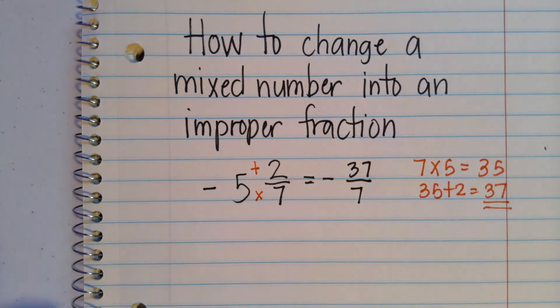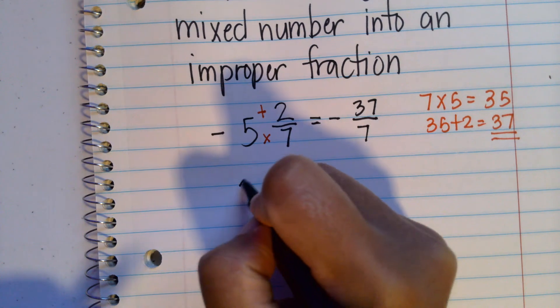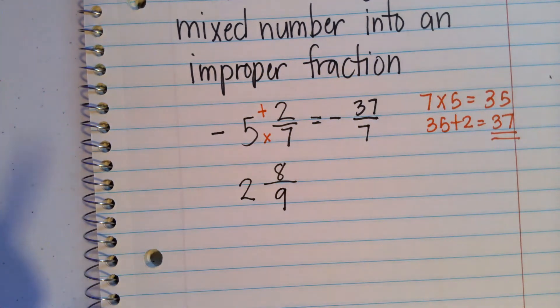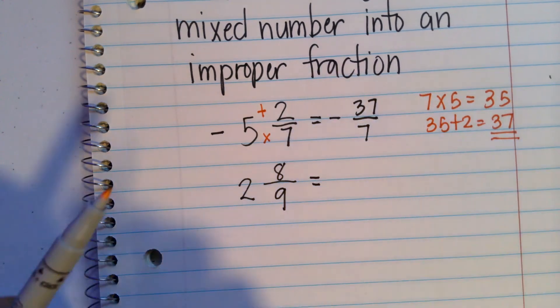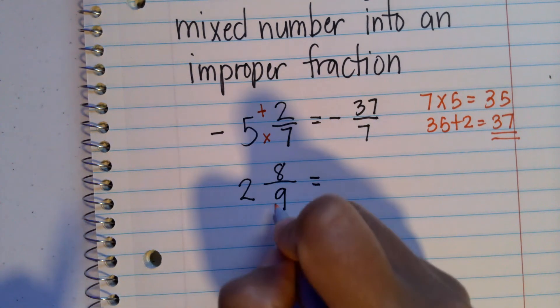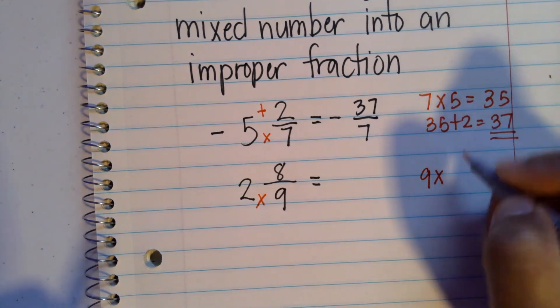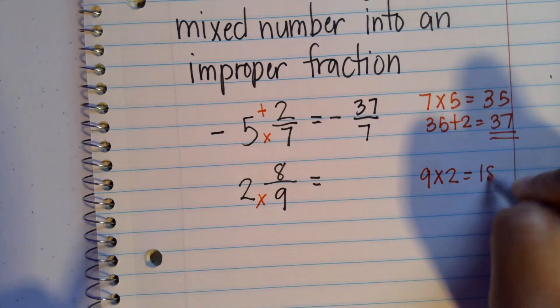Let's have another example. Let's say we have 2 and 8 ninths. Again, simply multiply the denominator by the whole number. So we have 9 times 2, which is equal to 18.